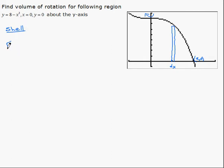Means we need a radius, height, and a thickness. Distance from the axis to the rectangle is x, that's the radius. The height is the top minus the bottom. The bottom is zero, the top is the function, 8 minus x cubed, and the thickness is dx.